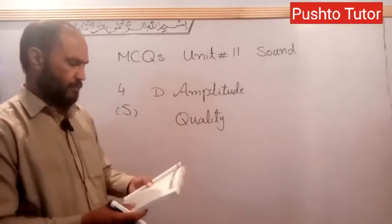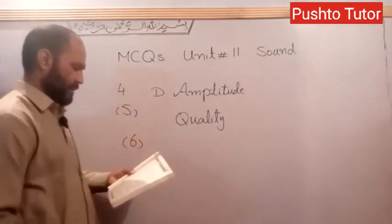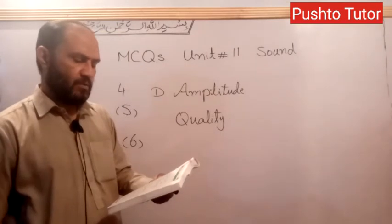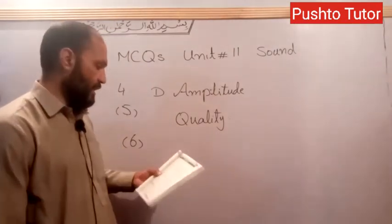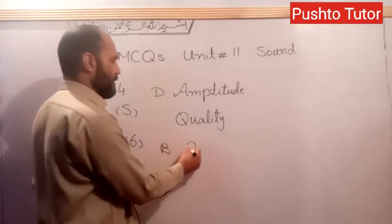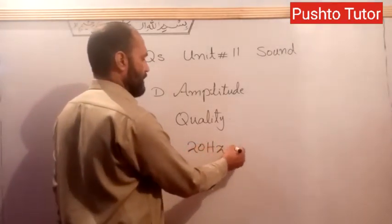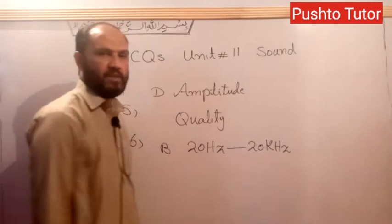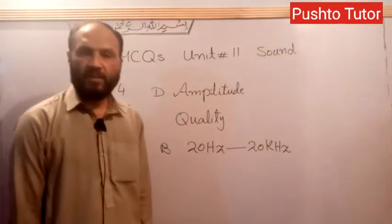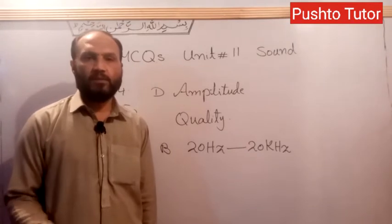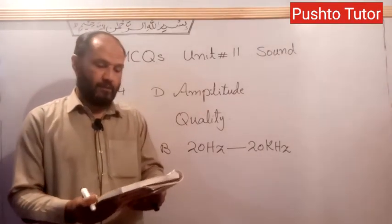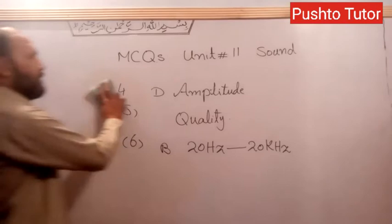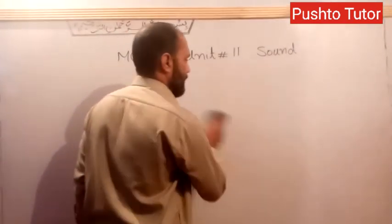Question number 6: Humans can hear sound that is between 20 Hertz and 20 kiloHertz. This is the audible frequency range for human beings — from 20 Hertz up to 20 kiloHertz. This range is called the audible frequency range.